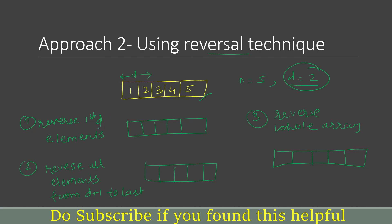The first step is to reverse the first d elements. Since d is 2, we reverse the first two elements. After reversing, 1 and 2 become 2 and 1, and the rest of the array stays the same. The second step is to reverse all elements from d+1 to the last. So we reverse the elements from index 2 to the last - that is 3, 4, 5 become 5, 4, 3. Now our array is 2, 1, 5, 4, 3. The third step is to reverse the whole array. After reversing, we get 3, 4, 5, 1, 2, which is our resultant rotated array.